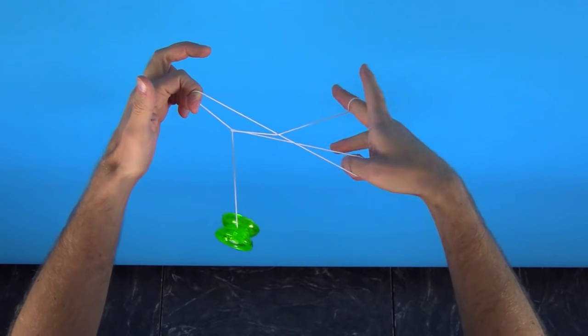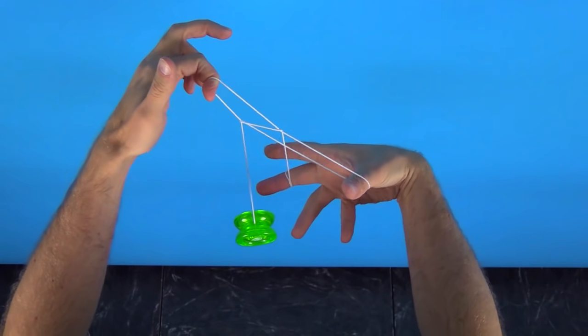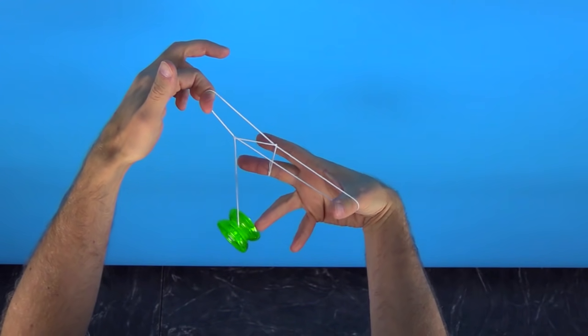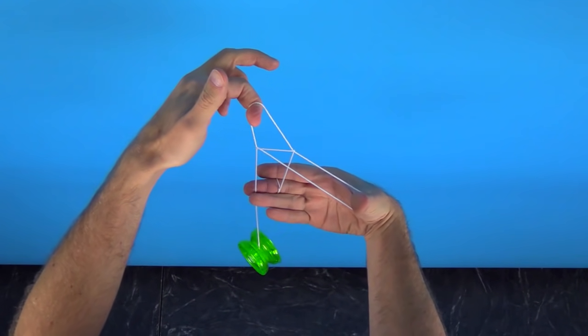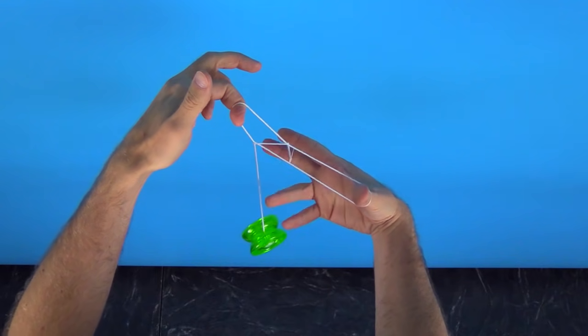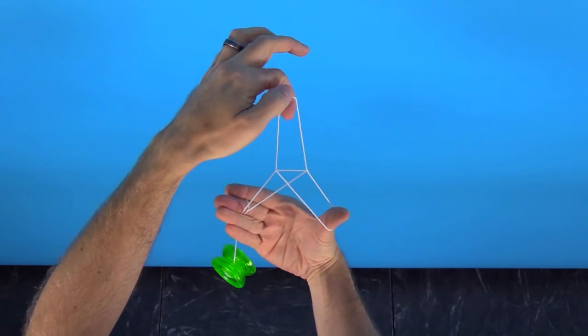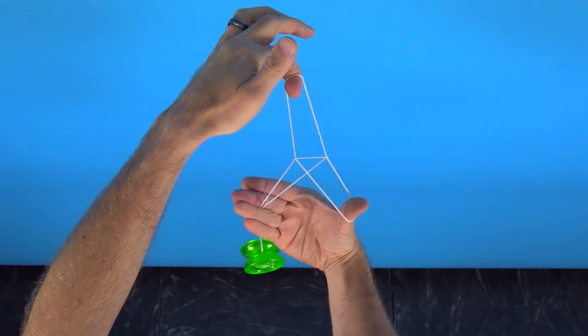And then you're going to twist your yo-yo hand down, and when you do that make sure to point your thumb at yourself, and then just pinch the string coming off the yo-yo between your ring finger and your middle finger, just like that. Give it some shape, and that's the Eiffel Tower.